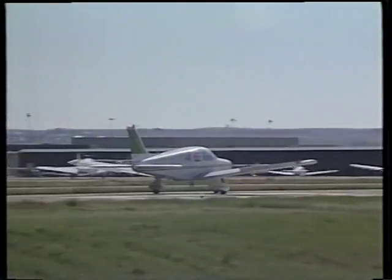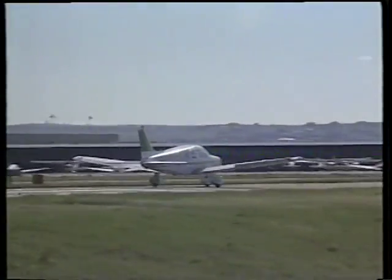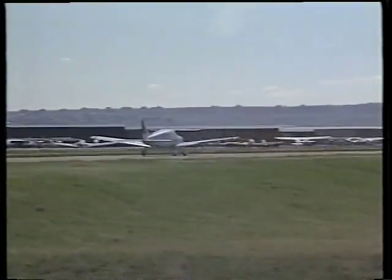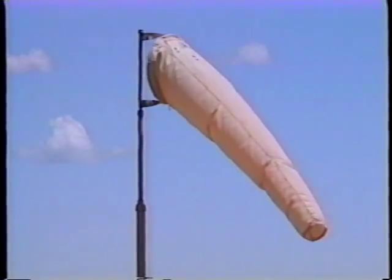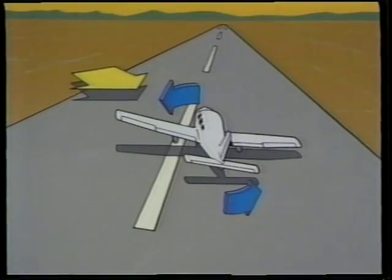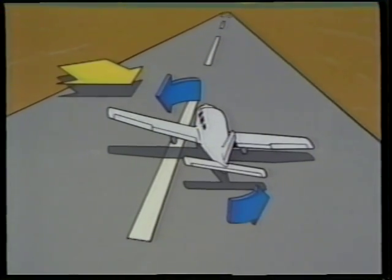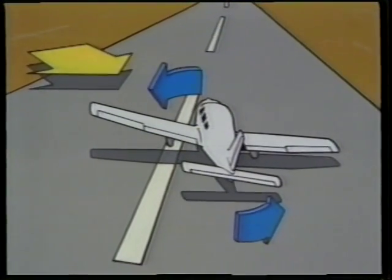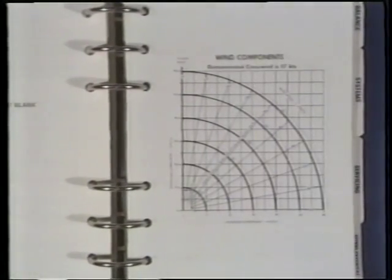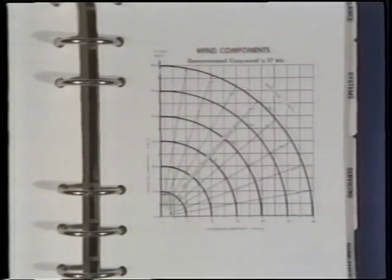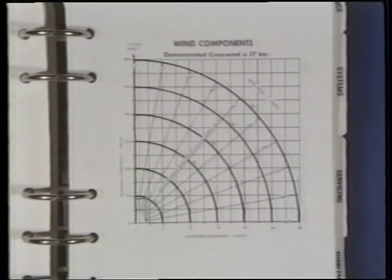The previous takeoff discussion assumed that the wind was light or directly down the runway. But what do you do if you have a crosswind? A crosswind tends to push and roll the airplane to the downwind side of the runway. The nose of the airplane will also have a tendency to turn into the wind — this is known as weathervaning. Some manufacturers provide crosswind component charts which list the maximum demonstrated crosswind component.